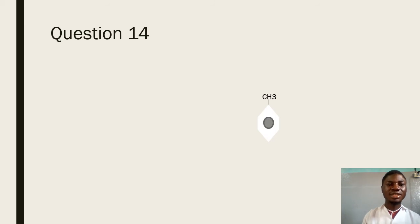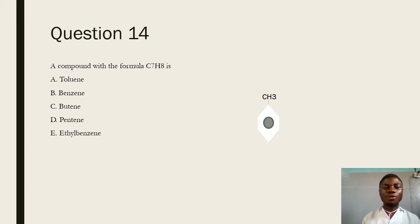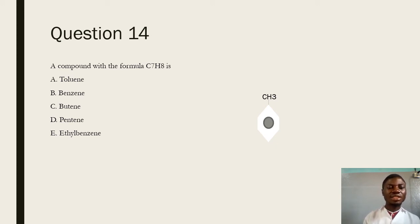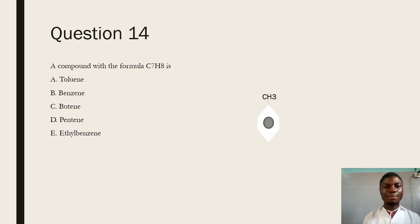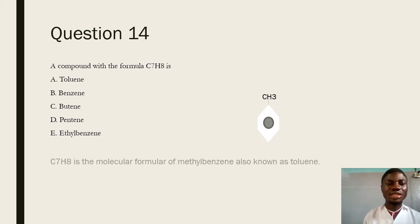Question 14 says: a compound with a molecular formula C₇H₈ is — from the normal laws of organic chemistry, we know that C₇H₈ cannot be a straight chain hydrocarbon, so it can only be a ring compound. Benzene is eliminated because benzene is C₆H₆. We have C₇H₈, meaning we have an additional carbon atom and two additional hydrogen atoms compared to benzene. Therefore, the answer is A, which is methylbenzene, also known as toluene.